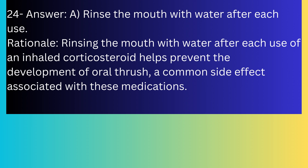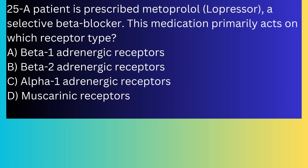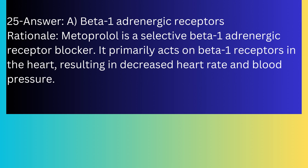Question number twenty-five: A patient is prescribed metoprolol (Lopressor), a selective beta-blocker. This medication primarily acts on which receptor type? A) Beta-1 adrenergic receptors, B) Beta-2 adrenergic receptors, C) Alpha-1 adrenergic receptors, D) Muscarinic receptors. The answer is A, beta-1 adrenergic receptors. Metoprolol is a selective beta-1 adrenergic receptor blocker that primarily acts on beta-1 receptors in the heart.